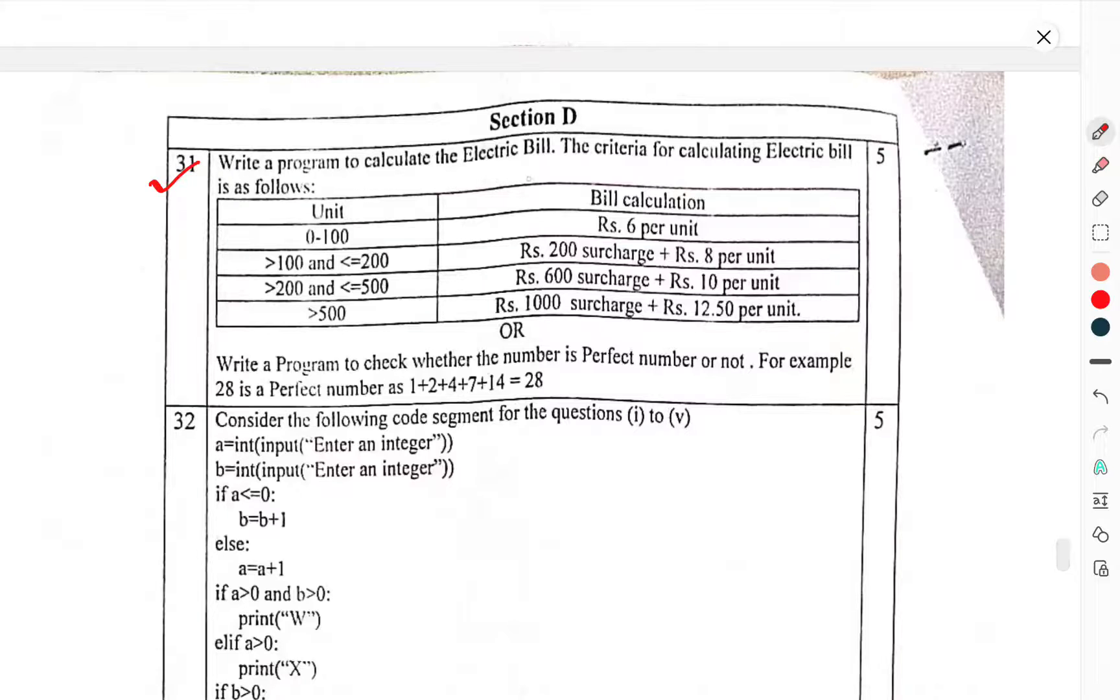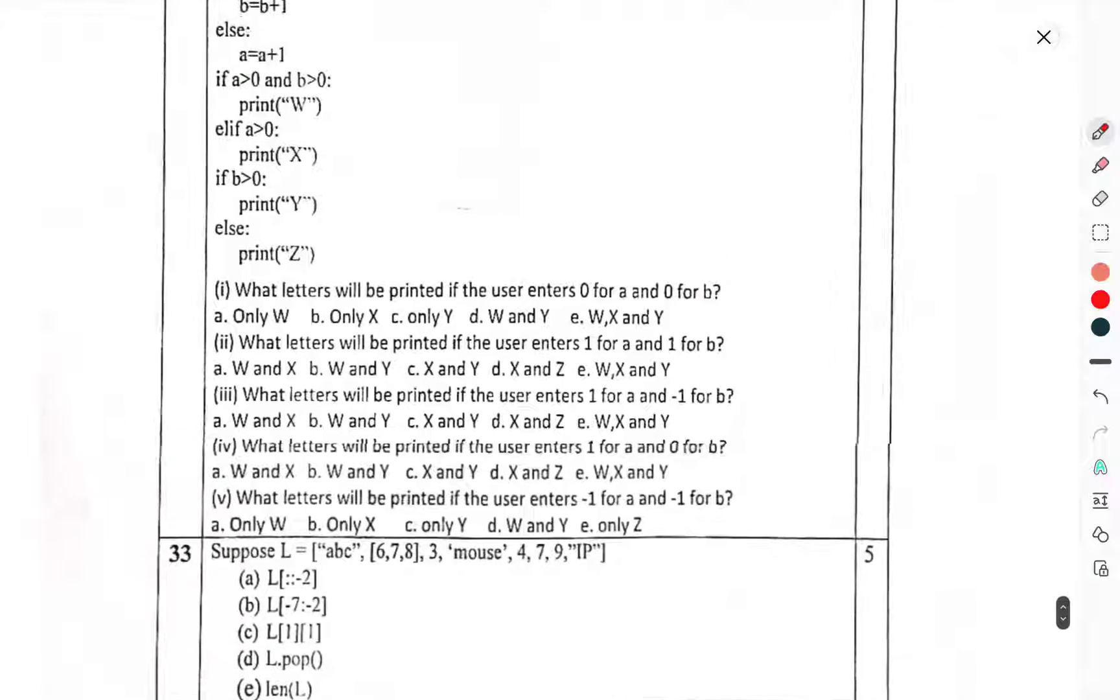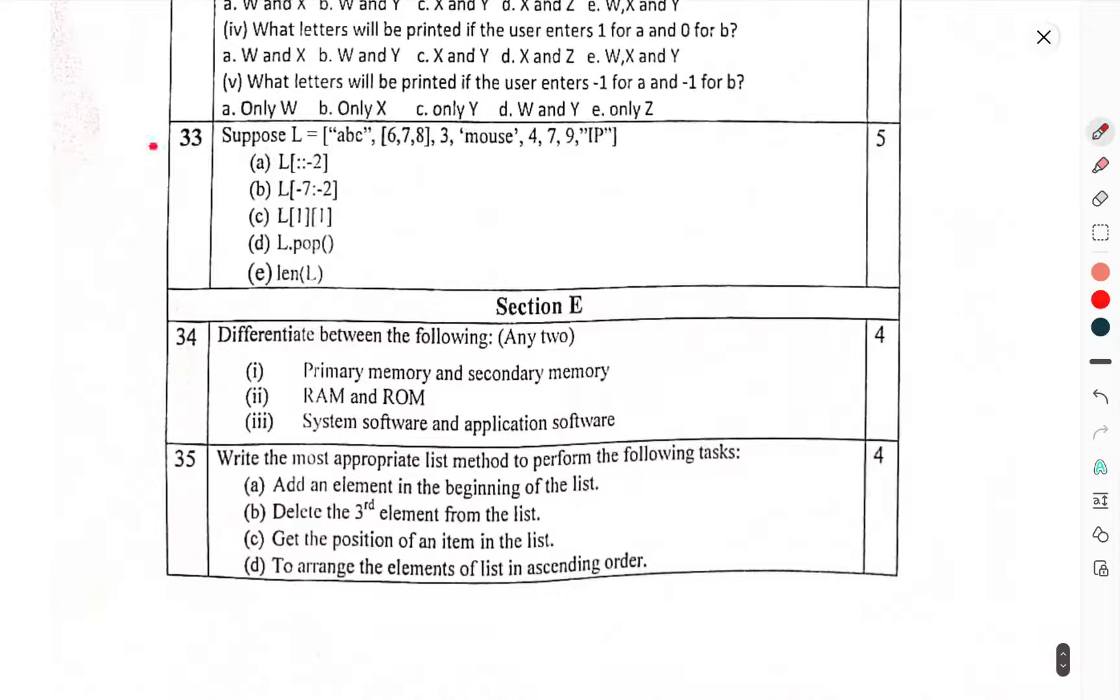Section D. Question 31: Write a program to calculate the electric bill. The criteria of calculating electric bill as follows. Question 32: Write a program to check whether a number is perfect or not. For example, 6 is a perfect number. Question 33: Consider the following code segment for questions 33 to 35. Suppose L is this, choose the correct option.